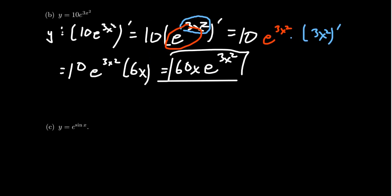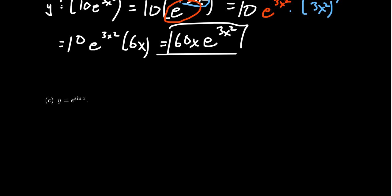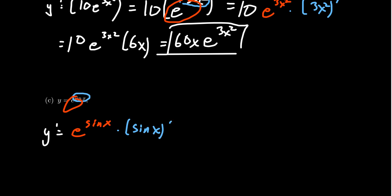Let's look at one more example: taking the derivative of an exponential composed with a trigonometric function. The exponent sine of x is our inner function, and the outer function is e to the x. By the chain rule, y prime equals the outer derivative — the derivative of the natural exponential is itself, so we get e to the sine of x — then multiplied by the inner derivative. The derivative of sine is cosine, so we get e to the sine of x times cosine of x.